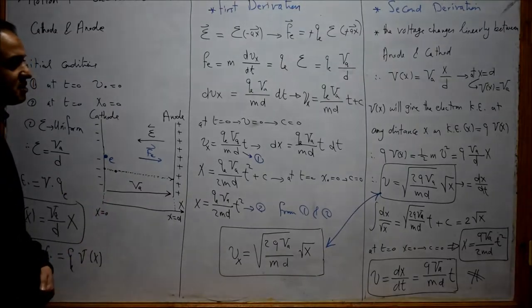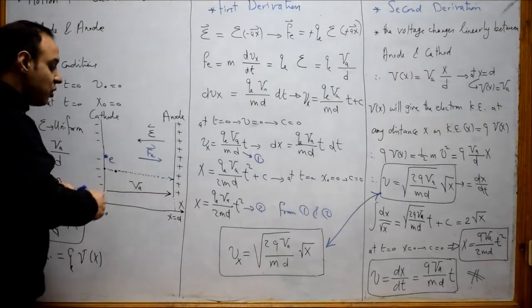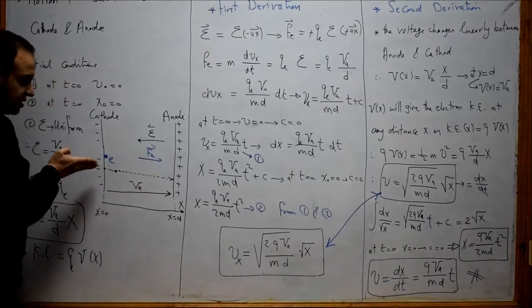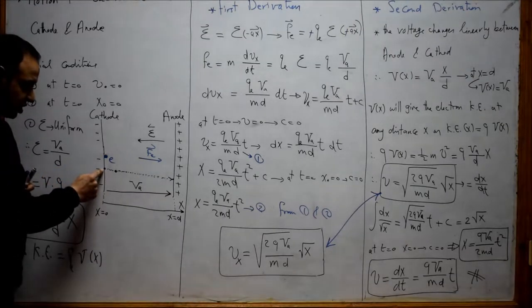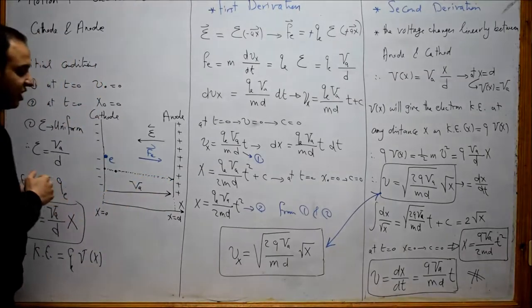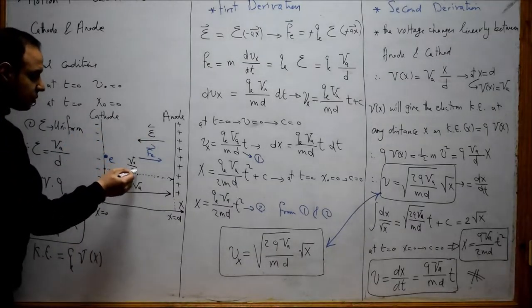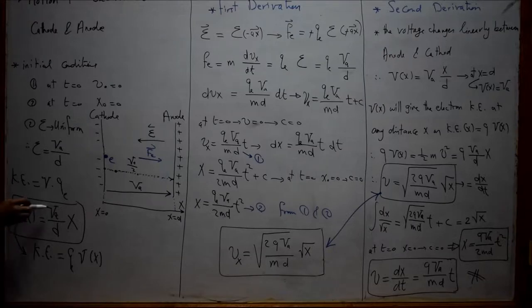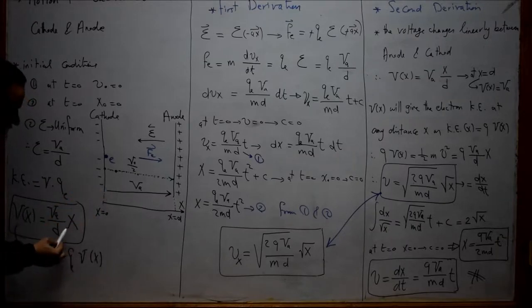The main idea behind this second derivation is that if you place an electron in a potential, this potential gives the electron kinetic energy. The potential Va changes linearly with distance — the voltage at the cathode is zero and at the anode is Va. The voltage at the midpoint is Va over 2. So the potential as a function of x is equal to Va over d multiplied by the distance x. At any point x, just measure the distance and substitute to get the potential.